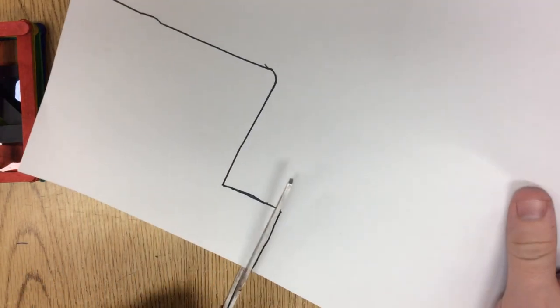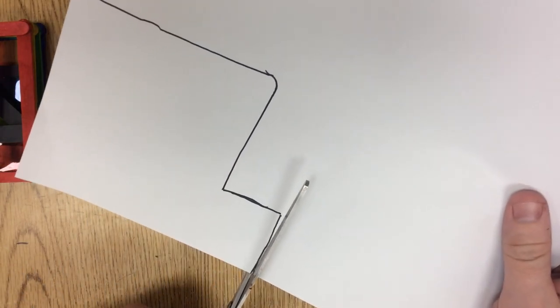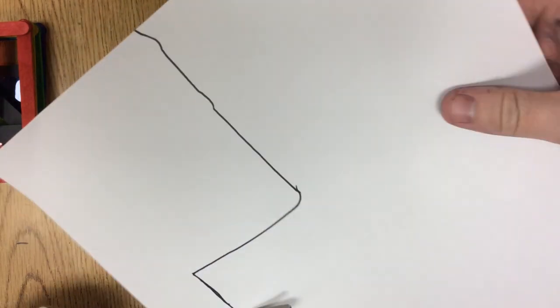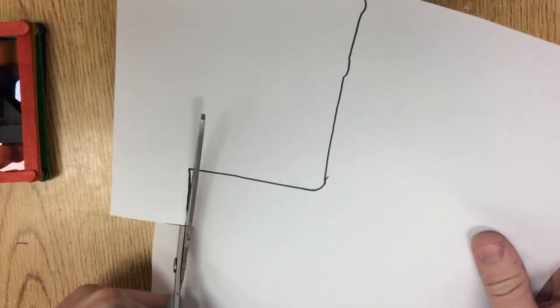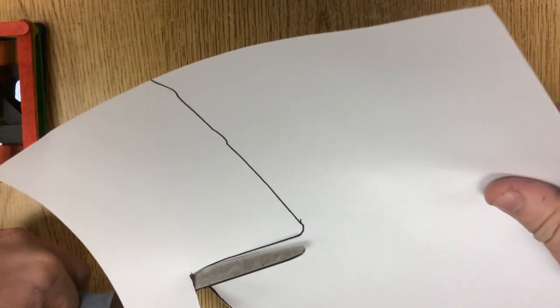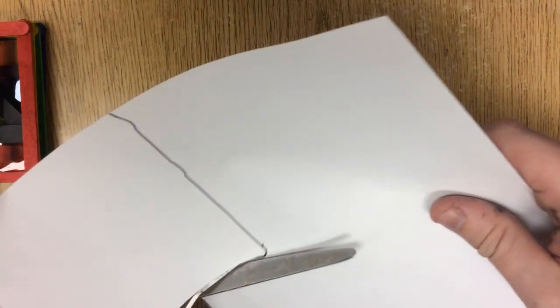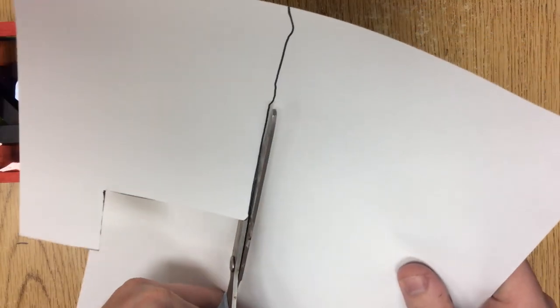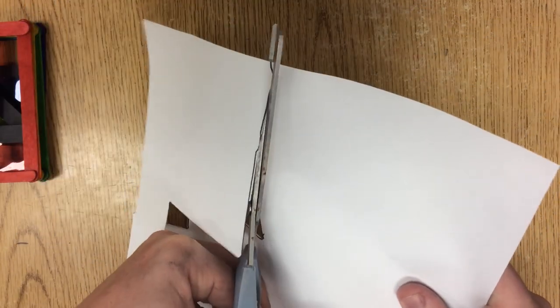I'm going to cut out that rectangle, that's where I'm going to put my, I guess it's not really a rectangle anymore. Now I'm going to cut out that irregular polygon, shall we say, and that's where I'm going to put my copper tape, my LEDs and battery.